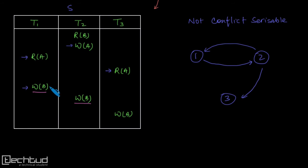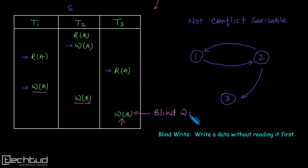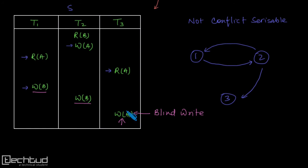Serializability is disturbed due to these two writes. If you notice, these two writes have no meaning in the schedule — they are redundant — because ultimately this last write overrides the data. These two writes are meaningless. And if you notice, this write is a blind write. When we have a blind write, we may have a situation where we can reschedule these operations — shift their execution position — so that we can get a view serial schedule.